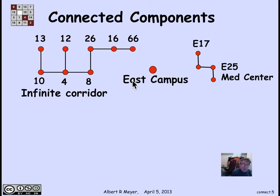And then there's the Medical Center in E17 and E25, which are a sequence of four buildings that are connected as indicated, but not connected at all to East Campus or the Infinite Corridor. That is, you have to go outside to get from East Campus to the Infinite Corridor or from the Infinite Corridor to the Medical Center, unless you sneak through the basement and other restricted areas.